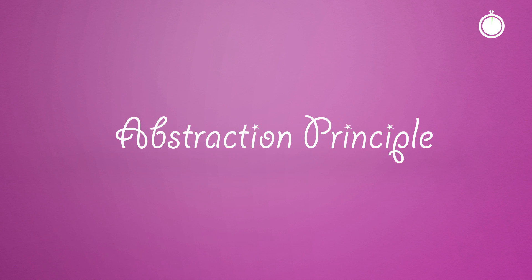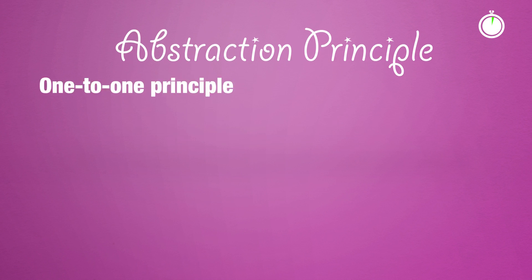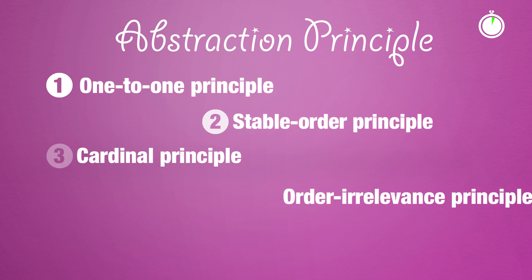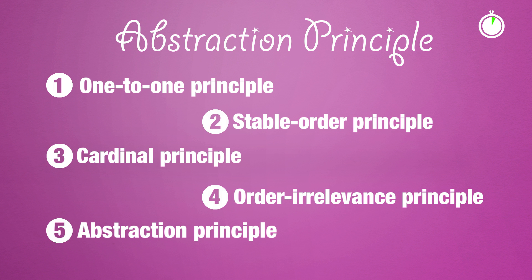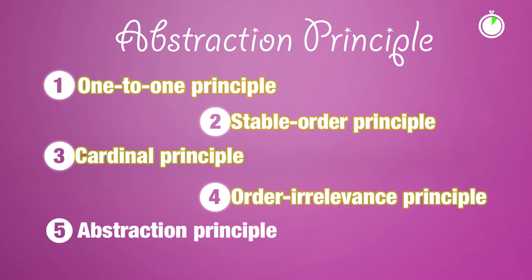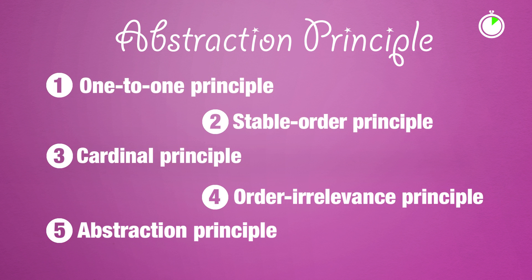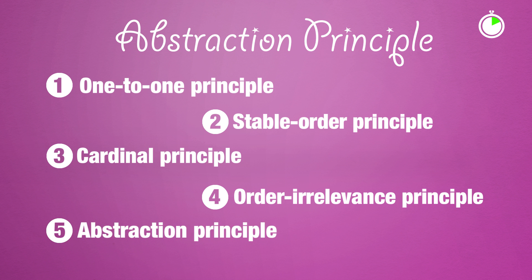What does the abstraction principle mean? There are five principles of rational counting. While the first four tell us how to count, this fifth and final principle is really about what we can count.